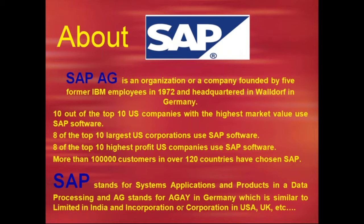SAP AG is a registered trademark. It is not only an ERP product but also an organization and company, founded in 1972 by former IBM employees. The company is located in Walldorf, Germany, making it a purely German-based ERP product. SAP stands for Systems, Applications, and Products in Data Processing.